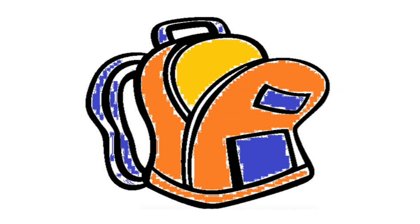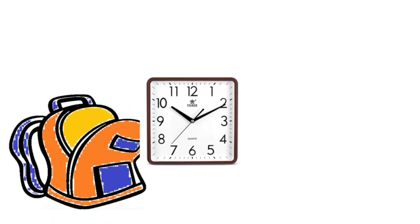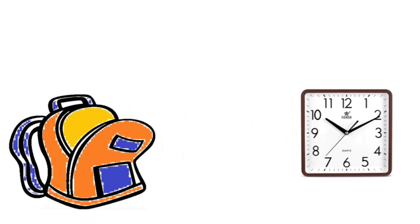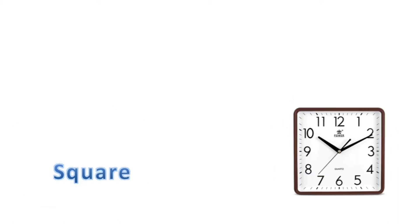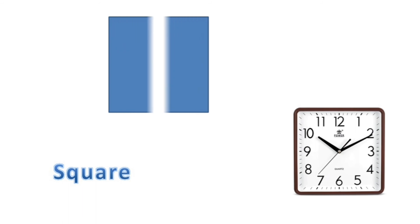Let's see what shapes are in the bag. A clock. What shape does a clock look like? A square.